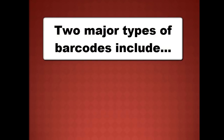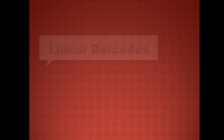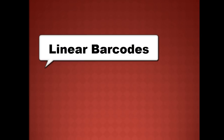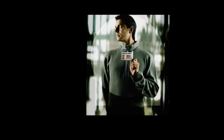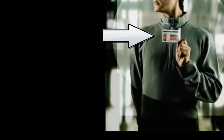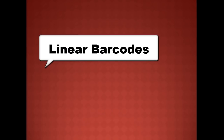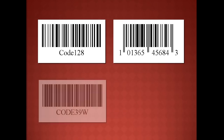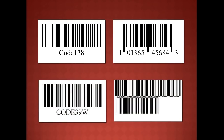There are two major types of barcodes: linear barcodes and two-dimensional barcodes. Linear barcodes are more common. It may be a UPC barcode on a canned item or a Code 39 barcode on a name badge. Some of the more common linear barcode types include Code 128, UPC, Code 39, and Data Bar.